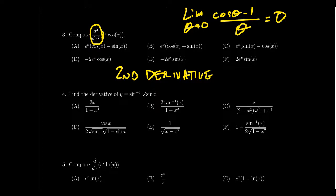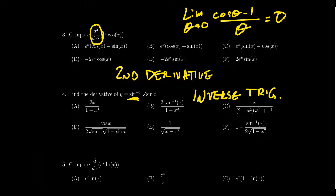Question number four will involve inverse trigonometric functions. For example, finding the derivative of y equals sine-inverse of the square root of sine. You do need to know the six derivatives of the inverse trigonometric functions. We learned about them when we did implicit differentiation — particularly in lecture 25, which covers the derivative of general inverse functions including trigonometric inverses.